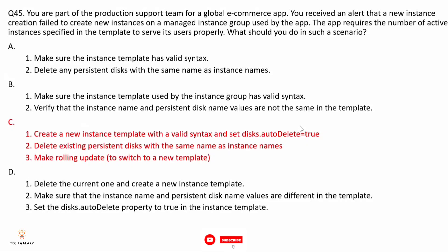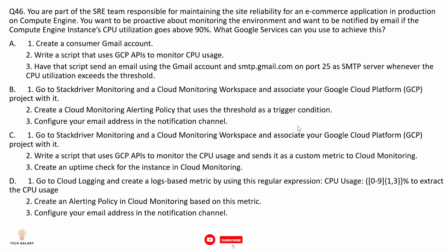Option D: delete the current template and create a new one, ensuring instance and persistent disk names are different, and set disk auto-delete to true. However, we cannot delete an existing instance template when it is in use — we need a rolling update. This option also doesn't address the failed instance creation or provide steps to resolve it. So option D is not correct.